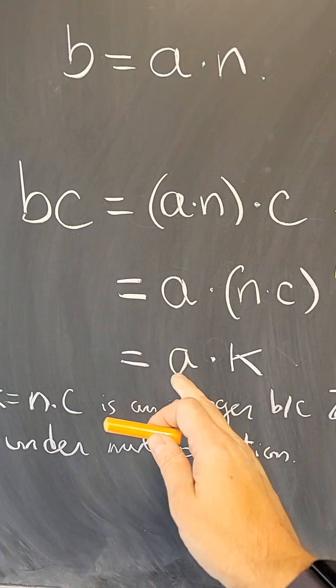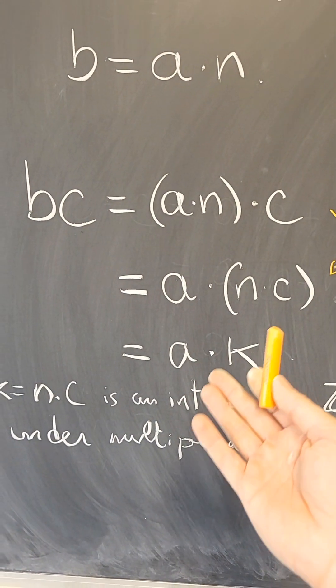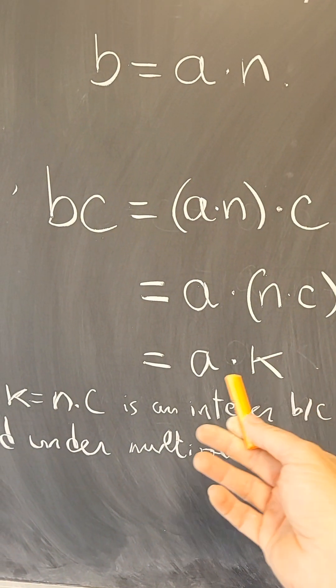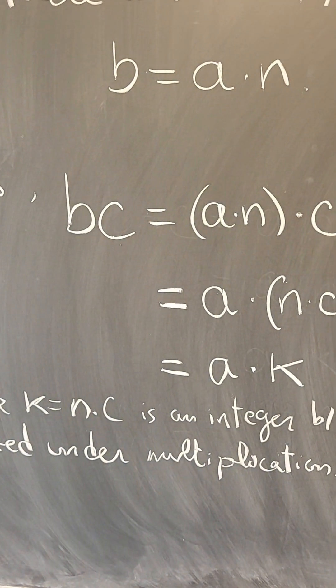Now I have BC equals A times another integer. By the definition of divisibility, that means A is a divisor of BC.